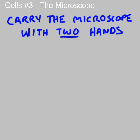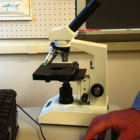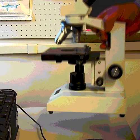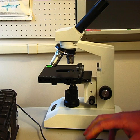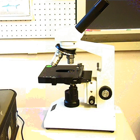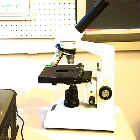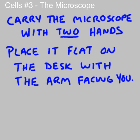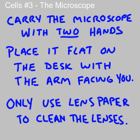There are a few important rules to remember when using a microscope. One, always carry the microscope with two hands — one under the base and one on the arm. Always place the microscope flat on the table or desk, never on books or notebooks or anything like that. Place it down so that the arm is facing you. You should only use lens paper to clean the lenses.